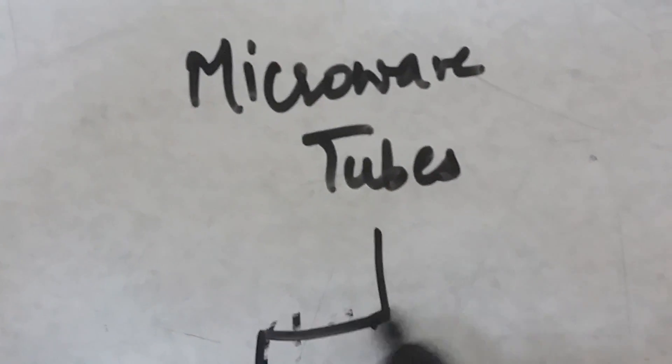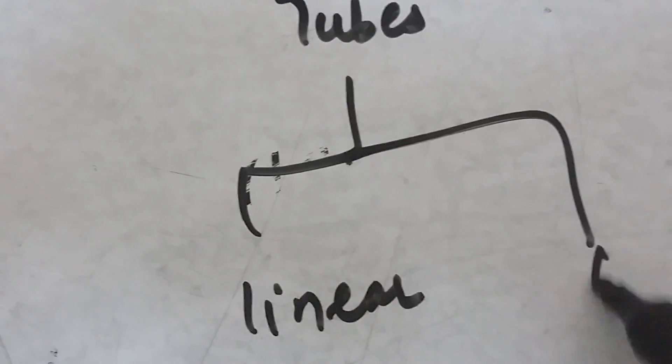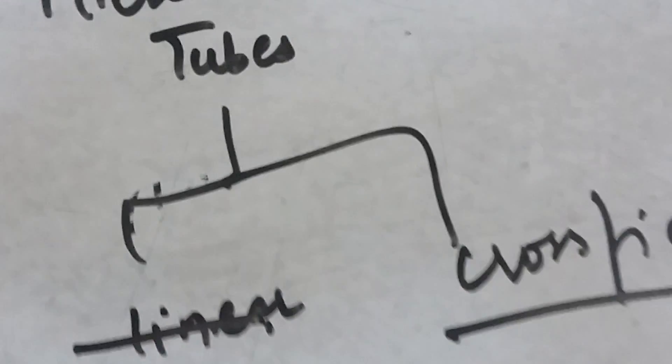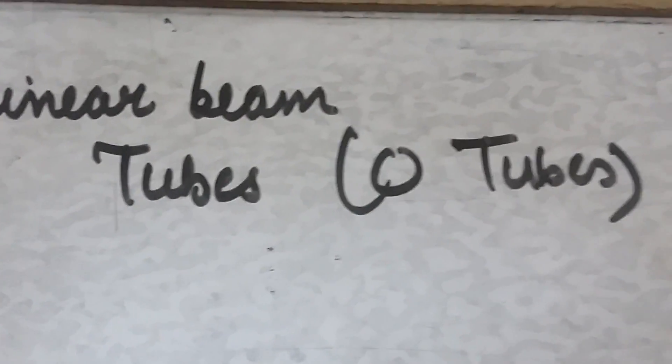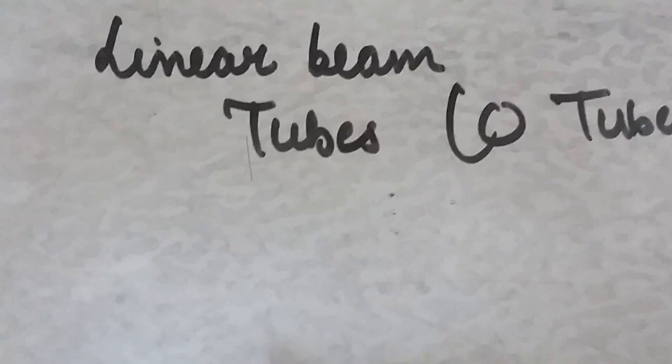There are two types of microwave tubes. The first one is linear beam tubes, and the second one is cross field tubes. Linear beam tubes are called O tubes, and cross field tubes are called M tubes.